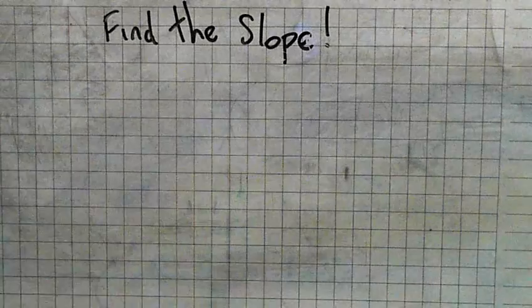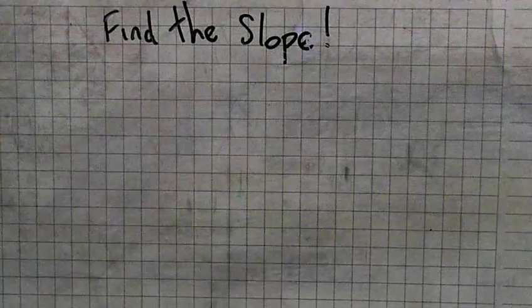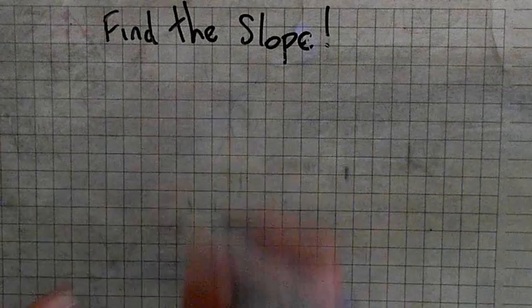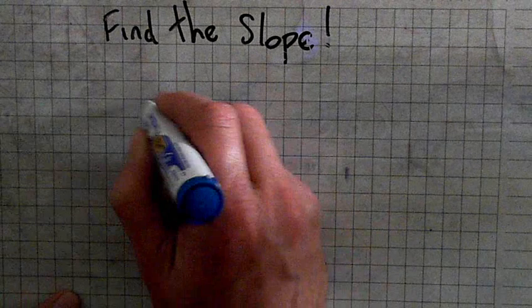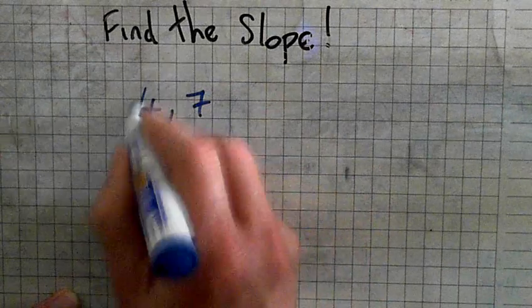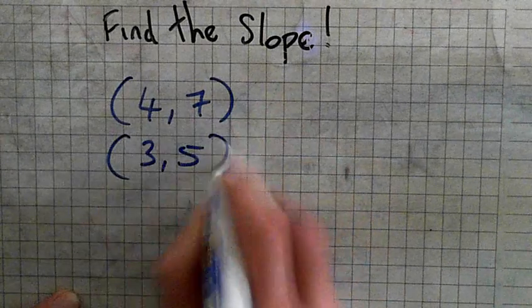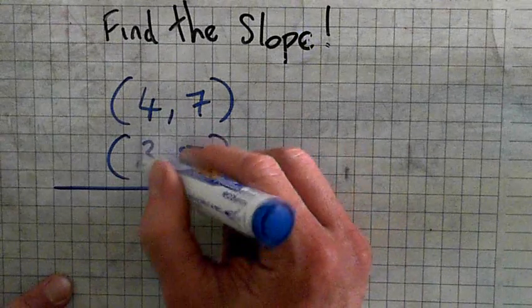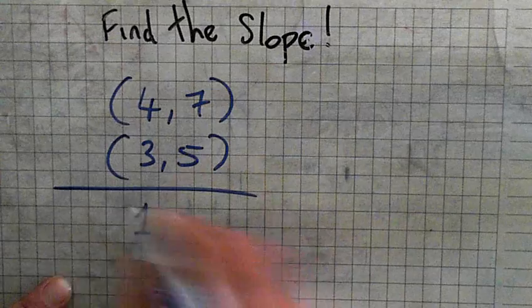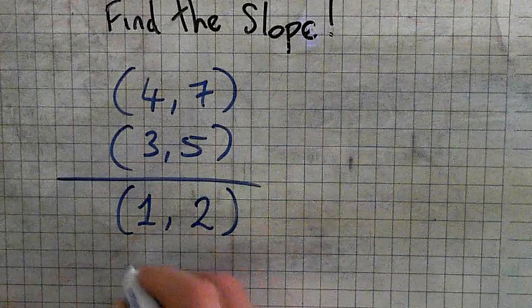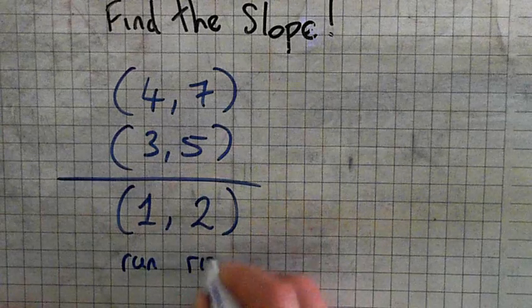We'll take another example. I'm going to find the slope between these two points: 3, 5 and 4, 7. What's the difference between the X values? 2. Difference is 2. This is the run. That's the rise.